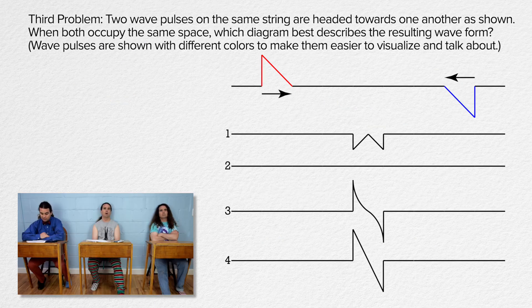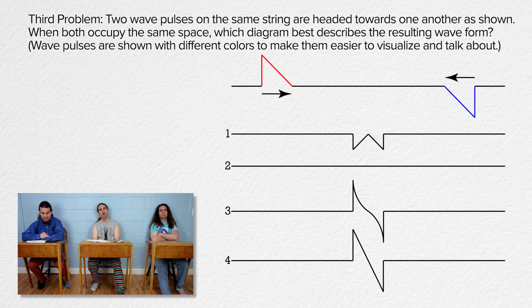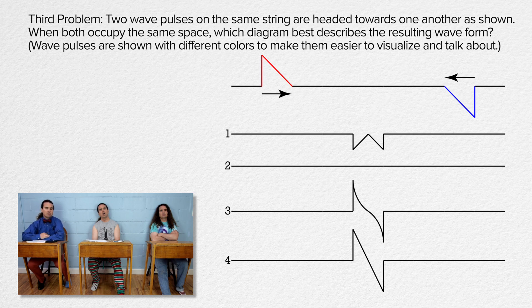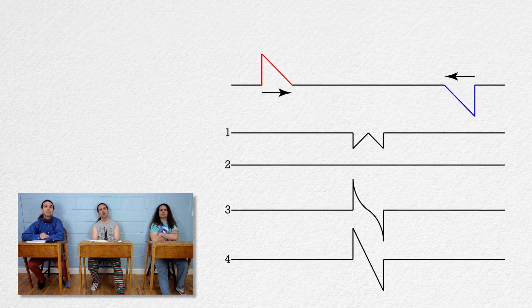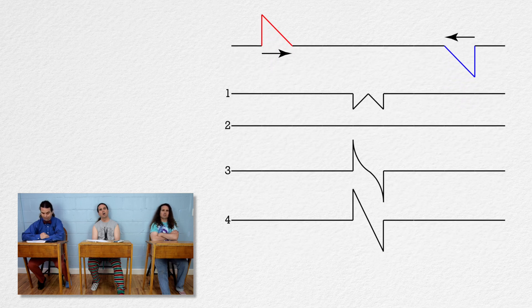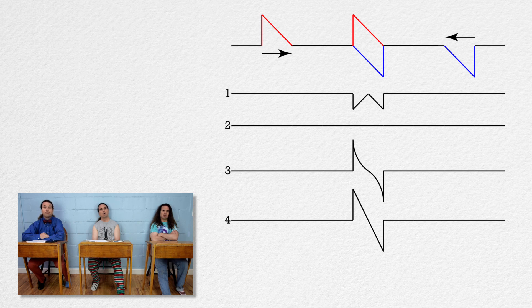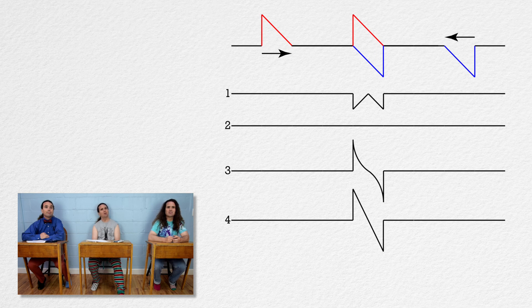Billy please read and Bo please answer the third problem. Two wave pulses on the same string are headed towards one another as shown. When both occupy the same space, which diagram best describes the resulting wave form? And then there's the same statement about the wave pulse colors. Okay, so let's start by moving the two wave pulses to the middle where they overlap and occupy the same space.